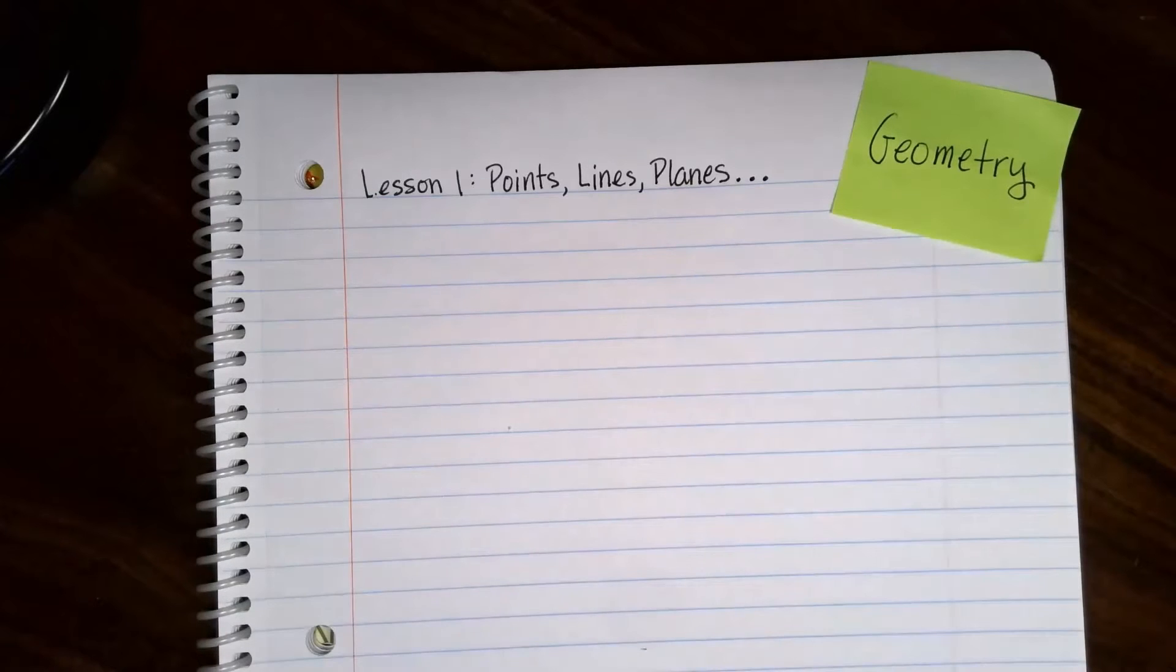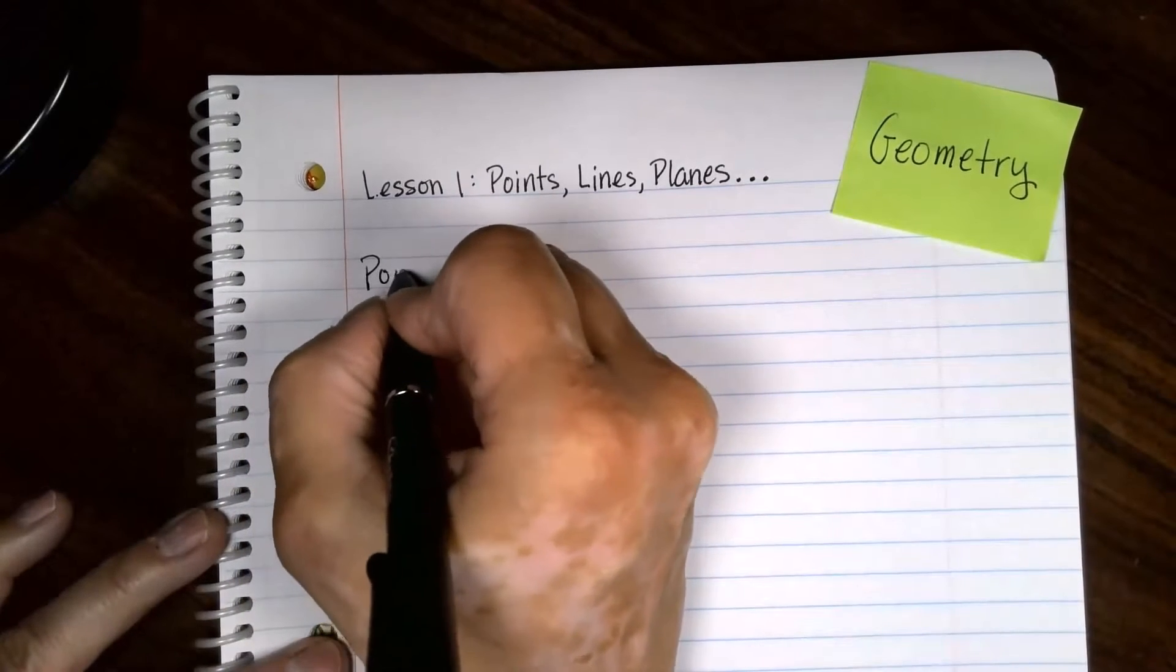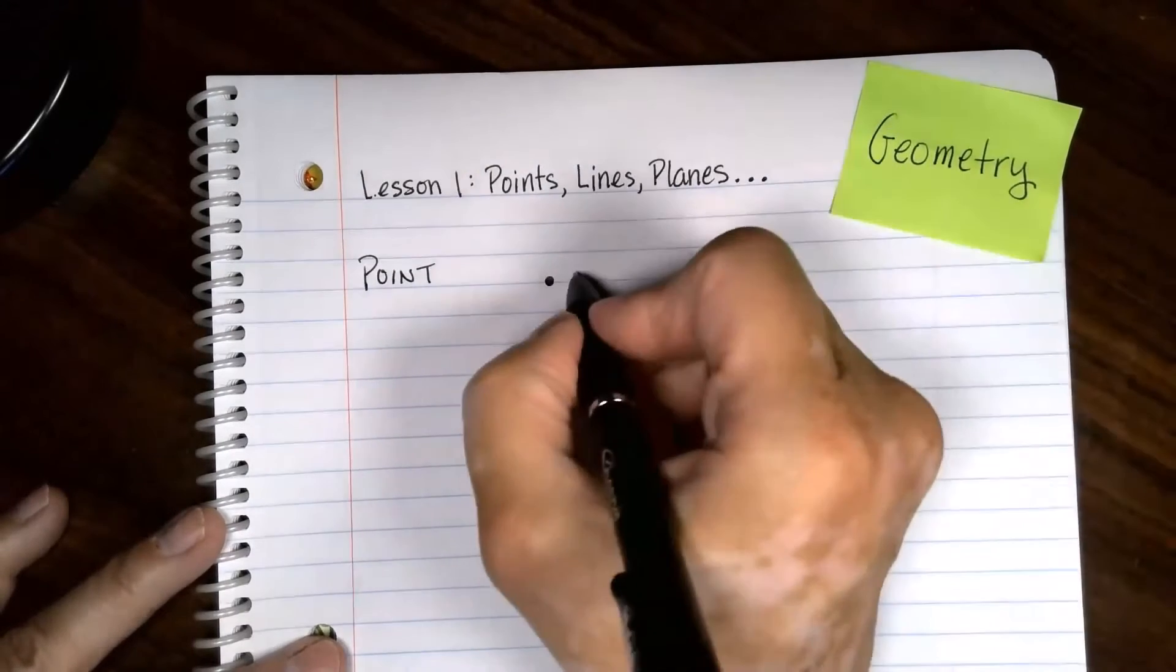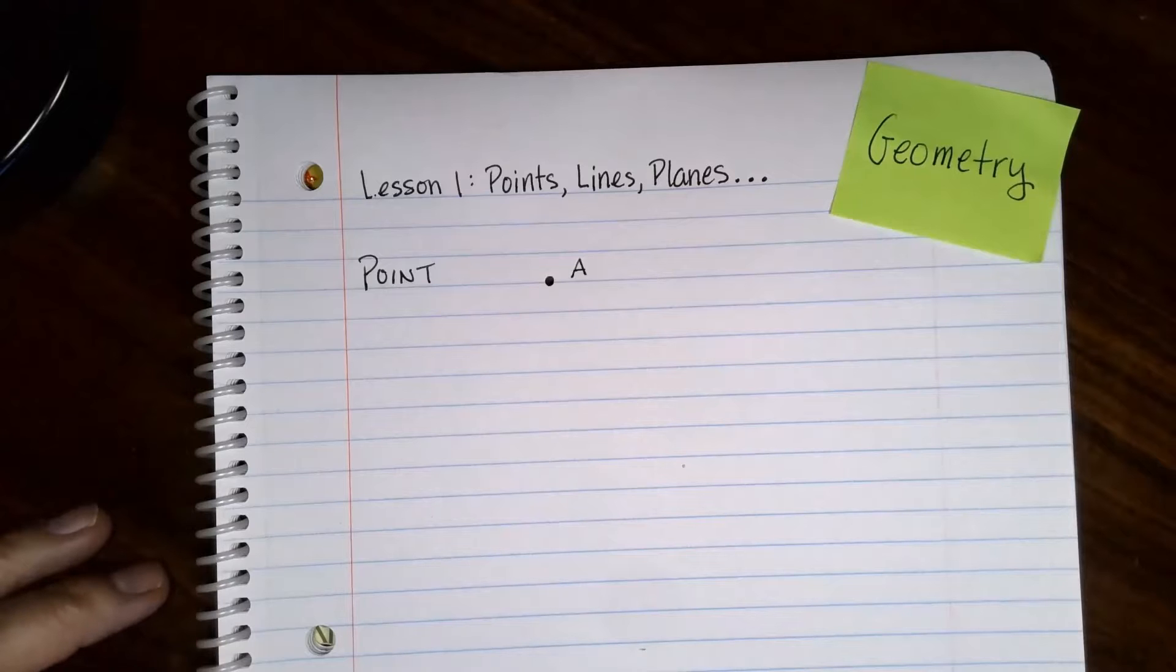Lesson one: points, lines, and planes, meaning there's going to be some other stuff in here as well. In geometry you have to start with some basic building blocks to create other things, and the first one is a point. Just make a dot and then you label it. We use capital letters to name our points.